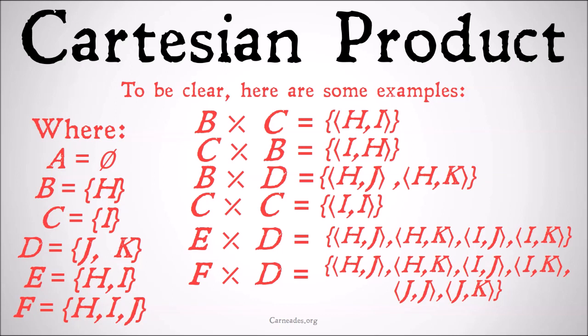Once again, pairing each member of F in the first slot with each member of D in the second slot. And finally, the Cartesian product A times F is just going to be the null set, since there are no members of A to pair with any members of F. We are left with the null set.